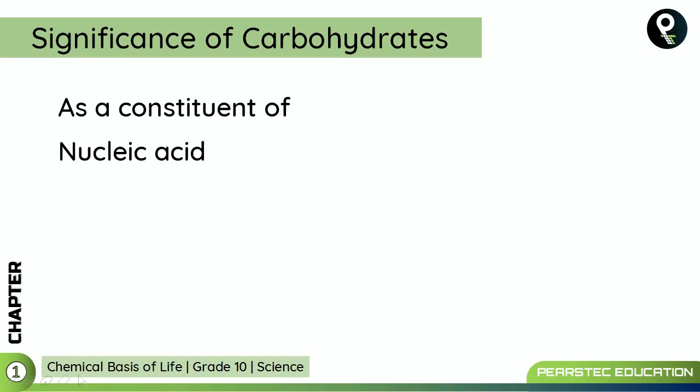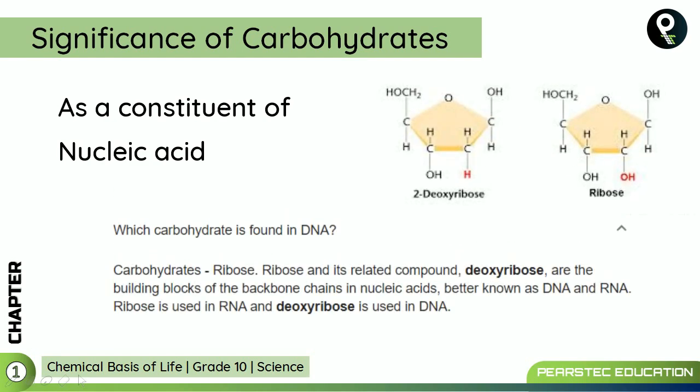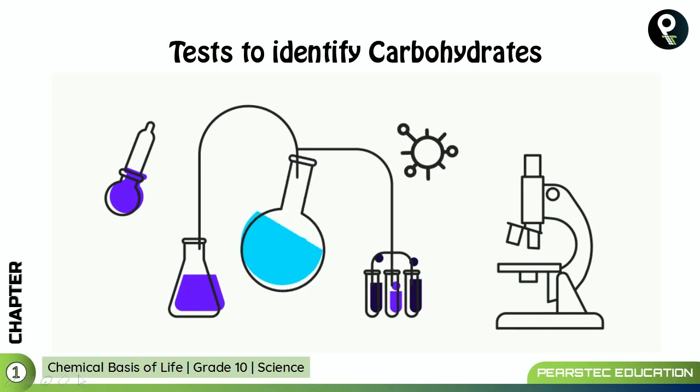As a constituent of nucleic acid: which carbohydrate is found in nucleic acids? Ribose. Ribose and its related compound deoxyribose are the building blocks of the backbone chain in nucleic acids, better known as DNA and RNA. So ribose is used in DNA. In nucleic acids, we also find carbohydrates — that is super interesting.